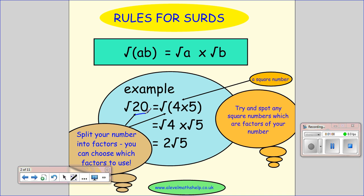So looking at here, I've got root 20. Hopefully you can see that that's the same as 4 times 5, 4 being a nice square number. So we get root 4 times root 5, and then root 4 becomes just 2, so it's 2 root 5.